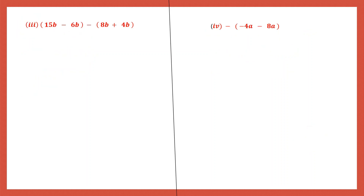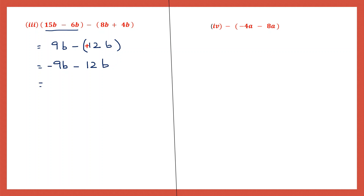Question 3: now here we have two sets of brackets. 15b minus 6b: 15 minus 6 is 9b. Then in brackets: 8 plus 4 is 12b. Now let me open brackets. 9b - and because it's minus before the bracket, the sign of the term inside will change. Plus 12b will become minus 12b. So this sign is plus and the other sign is minus. When signs are different, put the sign of the bigger number - minus - and subtract. 12 minus 9 is 3b. So the answer here is minus 3b.